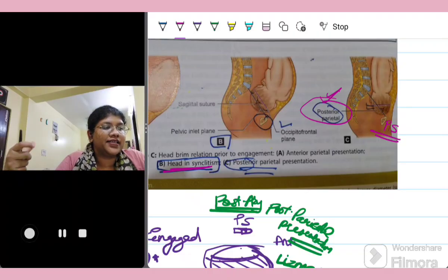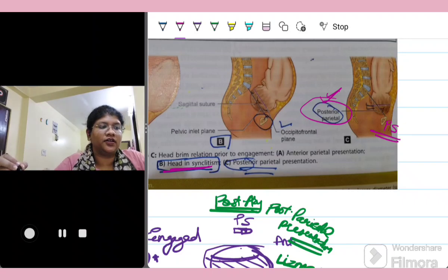So this helps the lesser diameter that is the super subparietal which is 8.5 cm across the pelvic brim instead of the larger biparietal diameter which is 9.5 cm for engagement.